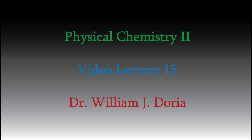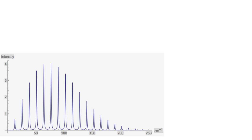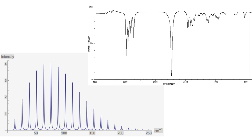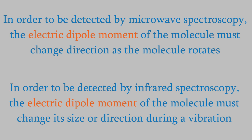Hi, and welcome back to my series of videos for Physical Chemistry 2. For the past few videos, we've been talking about spectroscopy. We've looked at both rotational and vibrational spectroscopy, and what motions are happening in molecules to produce peaks in spectra. We saw that in order to produce a signal in both rotational and vibrational spectra, the electric dipole moment of the molecule needs to change its magnitude or direction.